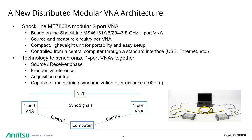The MS46131A has both source and measure circuitry built into the same unit, making it essentially a completely independent VNA port. It is compact and lightweight, making it easy to move and directly connect to the DUT or measurement antennas, eliminating much of the insertion loss due to long cables in these S-parameter measurements over long distances.